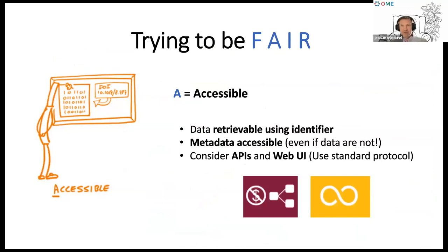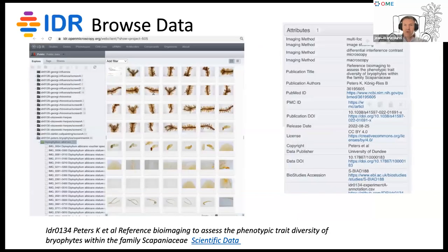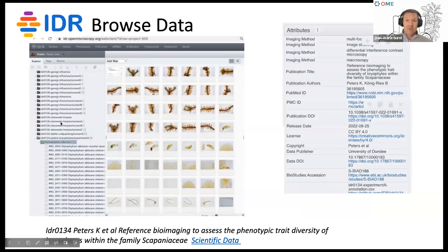The next part of being FAIR is accessible. One key element here is API access and web access. If people try to find your data, after that they want to access it in multiple ways. We offer in our case a web front end where you can browse plant data — the URL is openmicroscopy.org. If you are interested in browsing the data, please do so at any point in time — you can view and visualize the images.